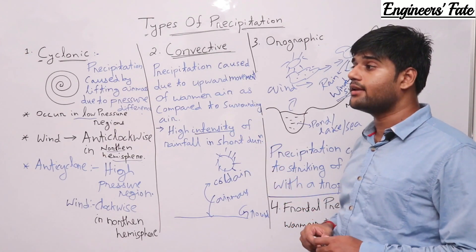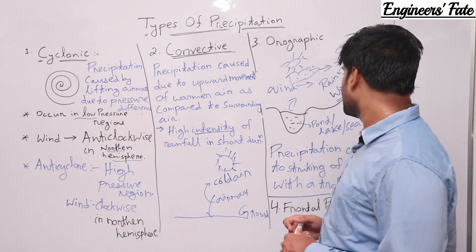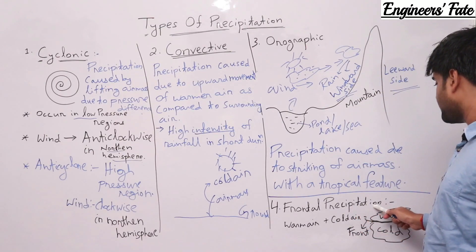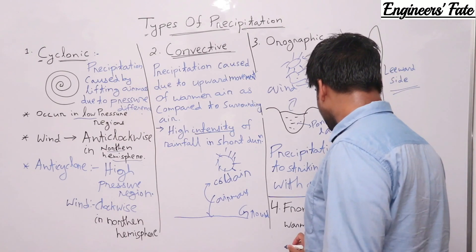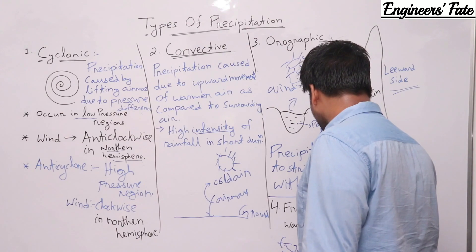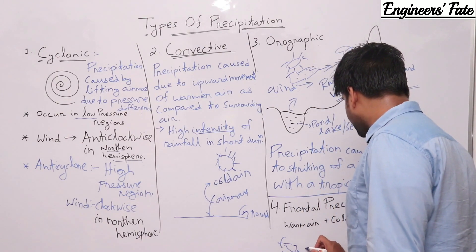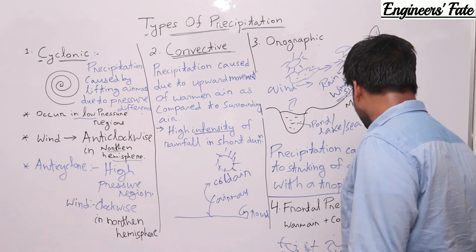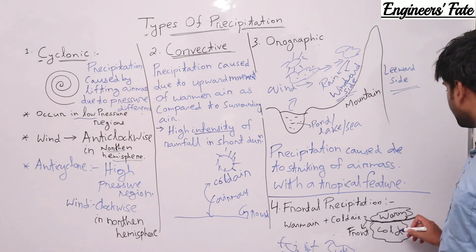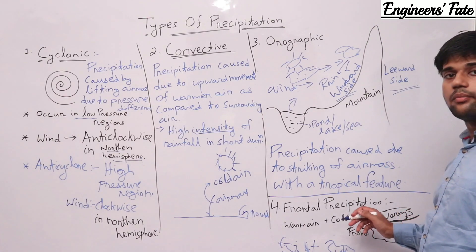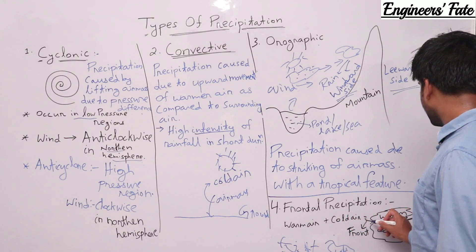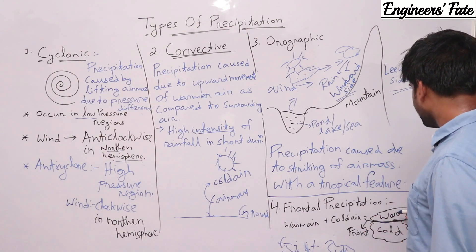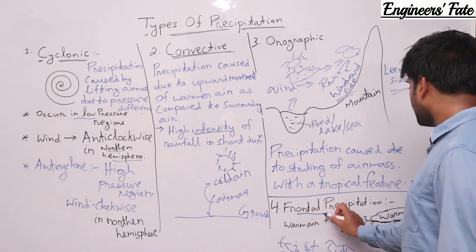The last type of precipitation is frontal precipitation. Warmer air moving due to wind gets connected with cold air. When warm air and cold air mix, the cold air density is higher than the warm air density, so the warm air moves above the cold air. A front is generated and then precipitation occurs.